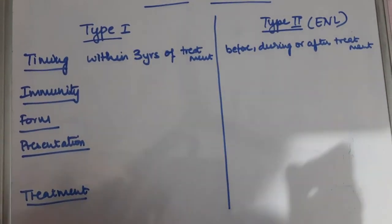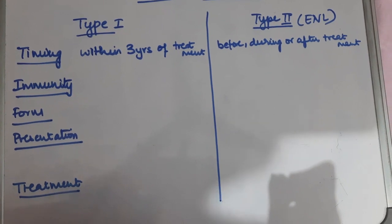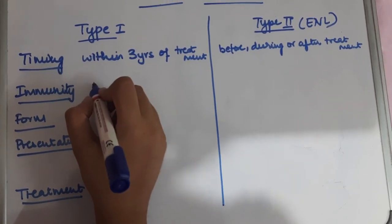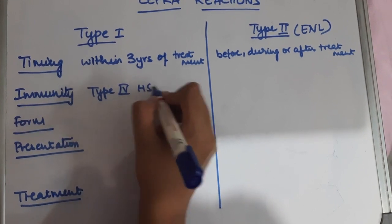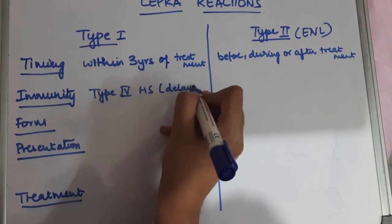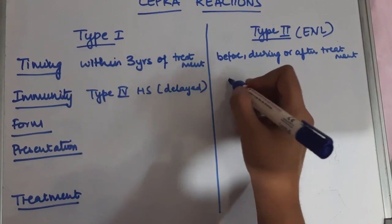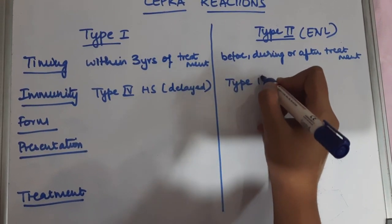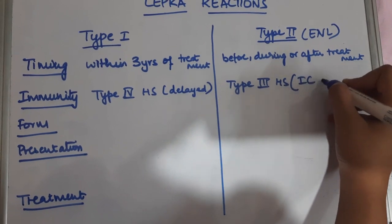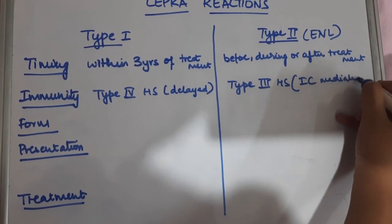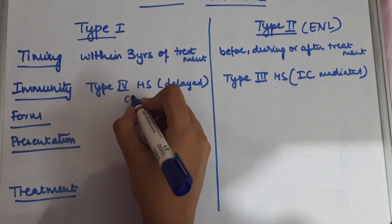The main type of immunity involved in type 1 reactions is type 4 hypersensitivity, which is a delayed type of hypersensitivity which is cell mediated. Whereas in type 2 lepra reactions, we see type 3 hypersensitivity which is mediated by immune complexes. This is carried out by humoral immunity.